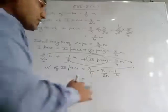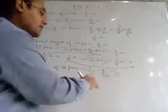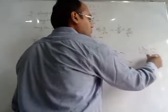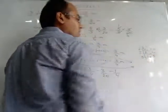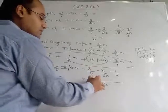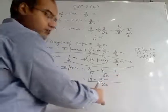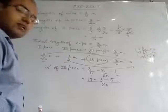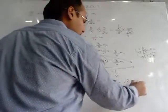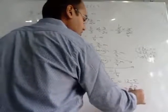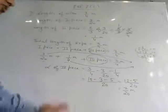Now we take LCM of 4 and 20, which is 20. So: (15 − 3 − 5) / 20. First 15 − 3 = 12, then 12 − 5 = 7. So the length of the 3rd piece is 7/20 metres. This is the answer of question number 3.